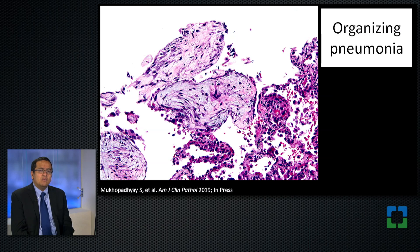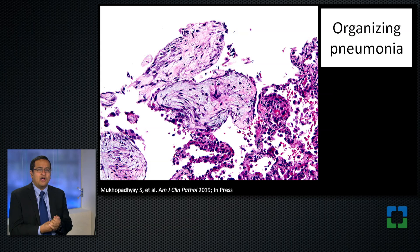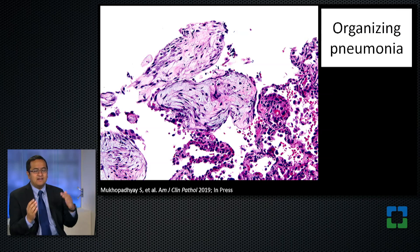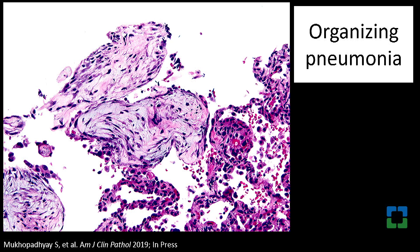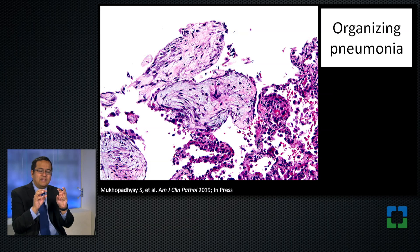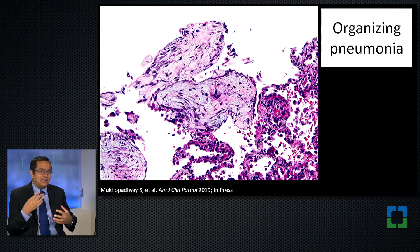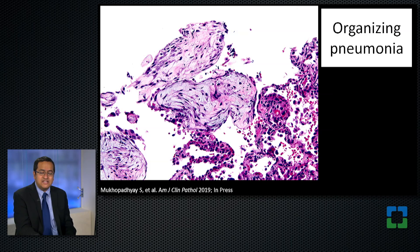Looking at the biopsy findings, one finding we noticed was organizing pneumonia. This happens when the lung is injured by a noxious agent, or when a pneumonia heals in an abnormal way. The characteristic finding is a structure called a fibroblast plug — a polyp-like growth within the alveoli that is filled with fibroblasts. The lung is trying to heal itself from acute lung injury. Organizing pneumonia was seen in some of our cases.